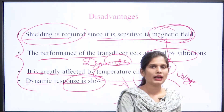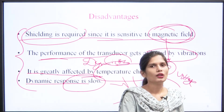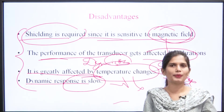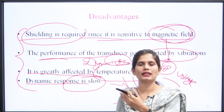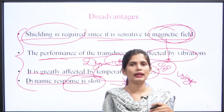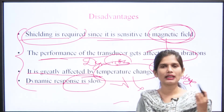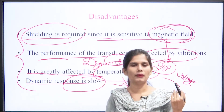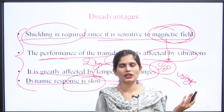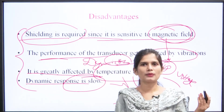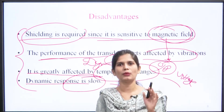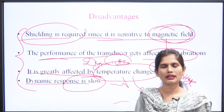For exam preparation: if asked about the basic construction of LVDTs, draw the diagram showing the components — soft iron core, how displacement occurs in left or right direction, and the working principle at null position and other positions. Describe the input-output characteristics showing how output voltage changes with displacement.